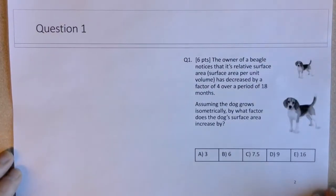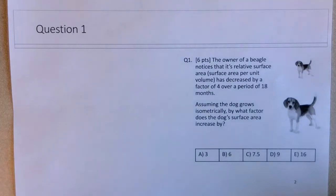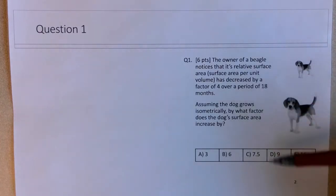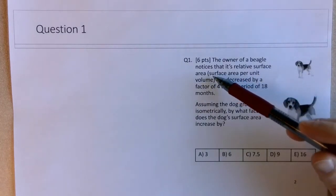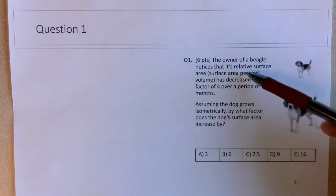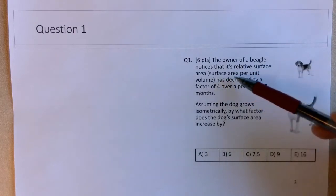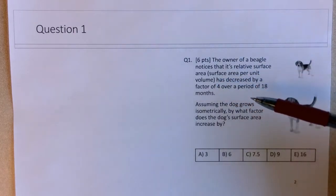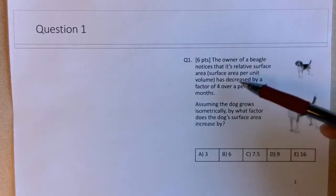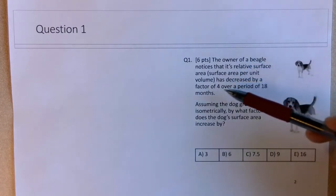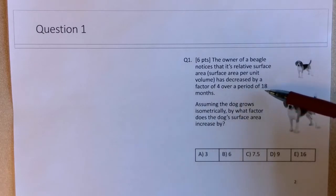Okay, so this first question on the final exam review material, we're looking at a question on scaling. Looking at a situation where we have this owner of a beagle notices that the relative surface area, and as I've put in parenthesis here, it's important to note that the relative surface area is not the surface area, but it's the surface area per unit volume. So A over V, and this owner notices that this is decreased by a factor of 4 over a period of 18 months.